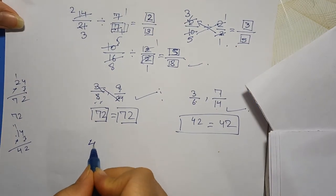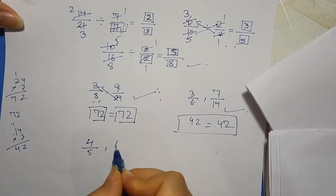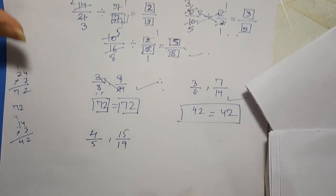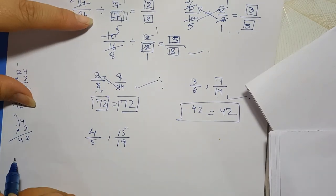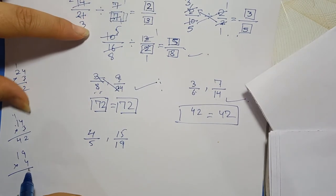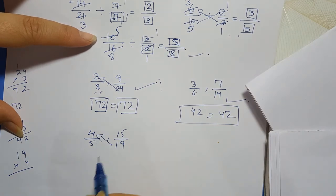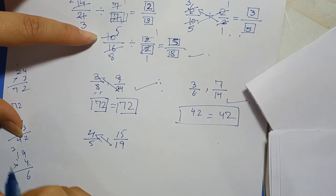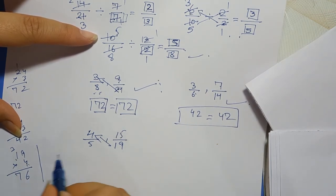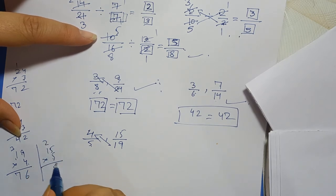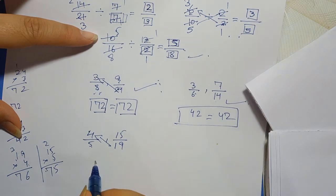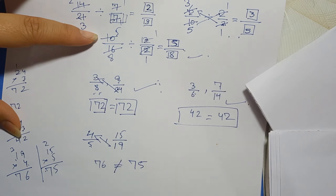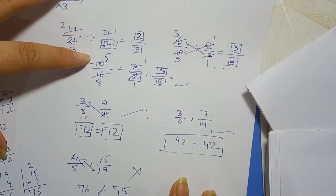Ek aur question: 4 upon 5 aur 15 upon 19 diya hua hai. Check karenge: 19 into 4 — 4 nines are 36, 4 ones are 4, plus 3 is 7, so 76. Aur 15 into 5: 5 fives are 25, 5 ones are 5 — 75. 76 aur 75 equal nahin aaya, that means yeh equivalent fraction nahin hai.